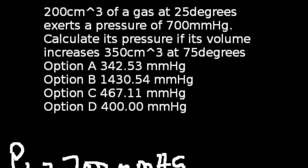We are given 4 options in this equation and the correct answer is option C, which is 467.11 mmHg. So, let us quickly look at how we got that.